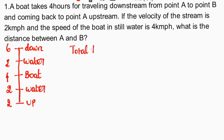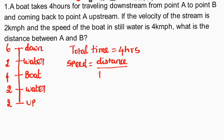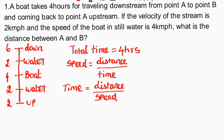Total time is 4 hours. Using time equals distance divided by speed: upstream time plus downstream time equals total time. So 4 equals x divided by upstream 2 km per hour, plus x divided by downstream 6 km per hour.